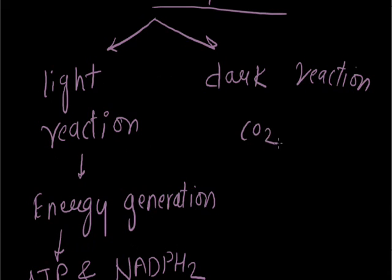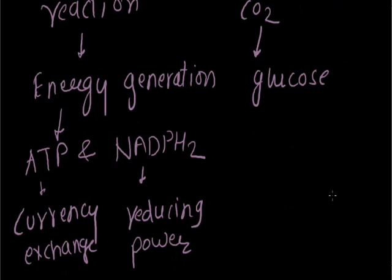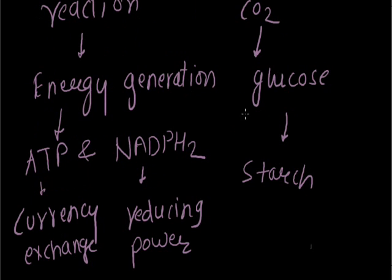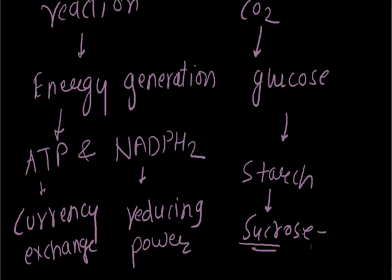And in the dark reaction, what happens? The CO2 is converted into glucose. And this glucose will be stored in the form of starch. And if we talk about transportation, the starch will be transported in which form — in sucrose form. Transportation is in sucrose form.